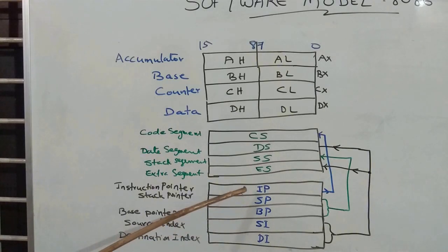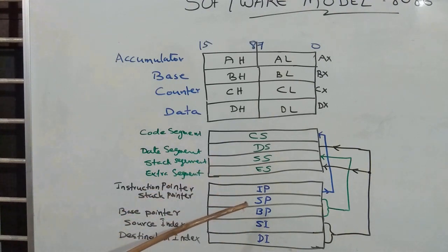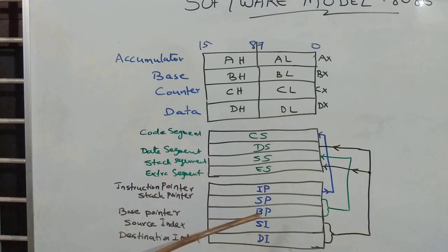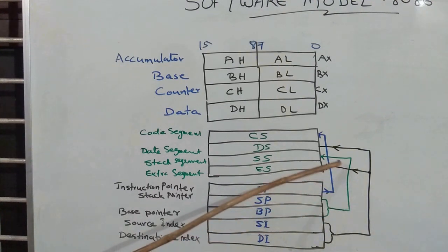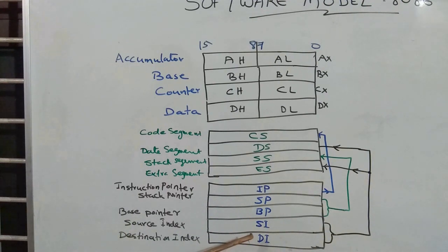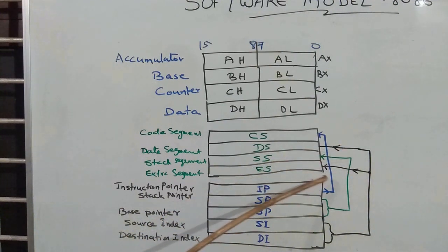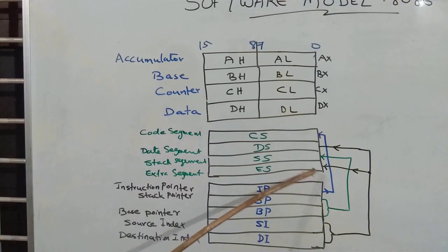The instruction pointer register works with the code segment. The stack pointer and base pointer registers work with the stack segment. The source index register SI and destination index register DI work with the data segment register and the extra segment register.